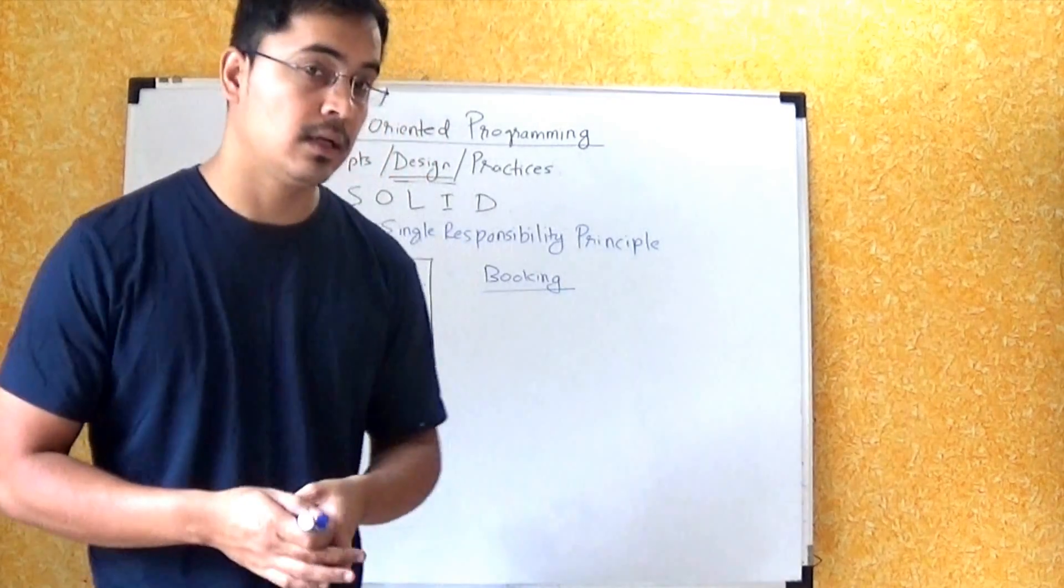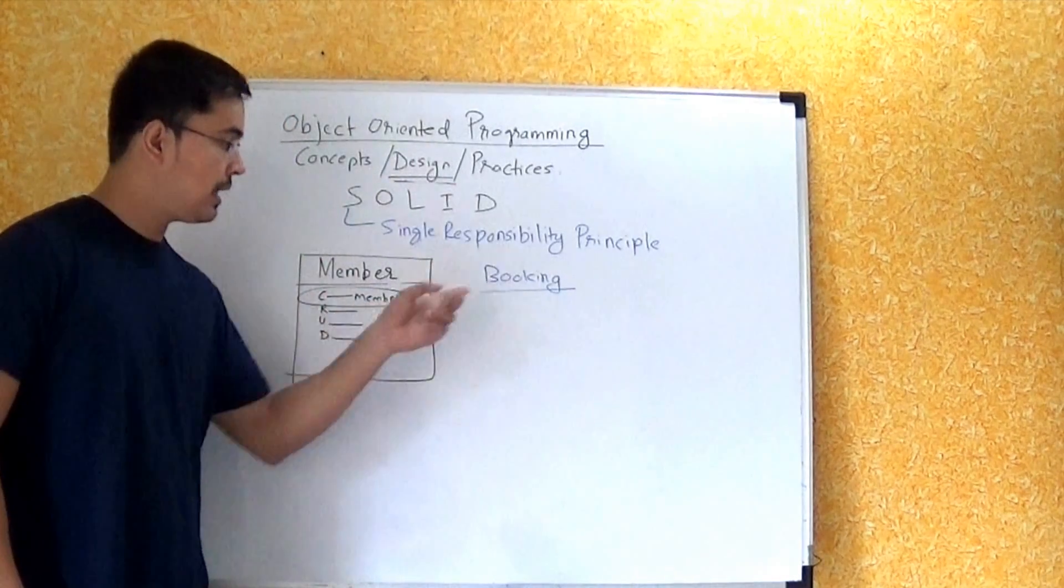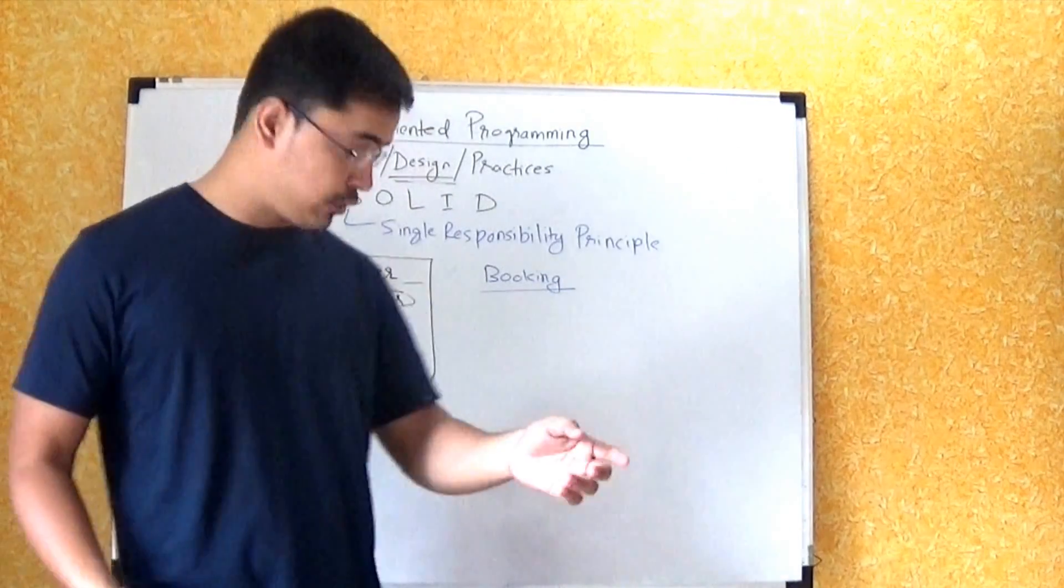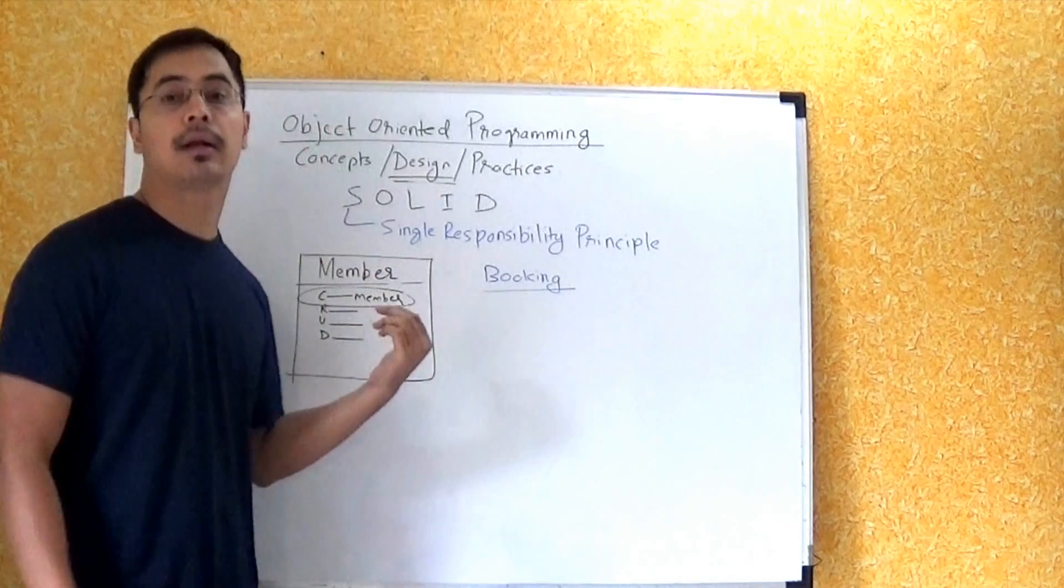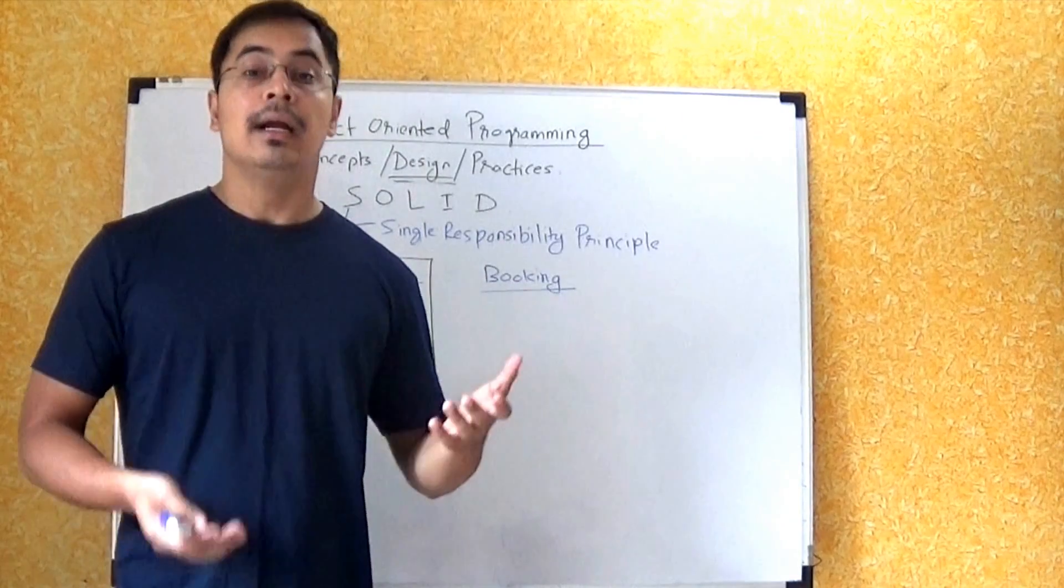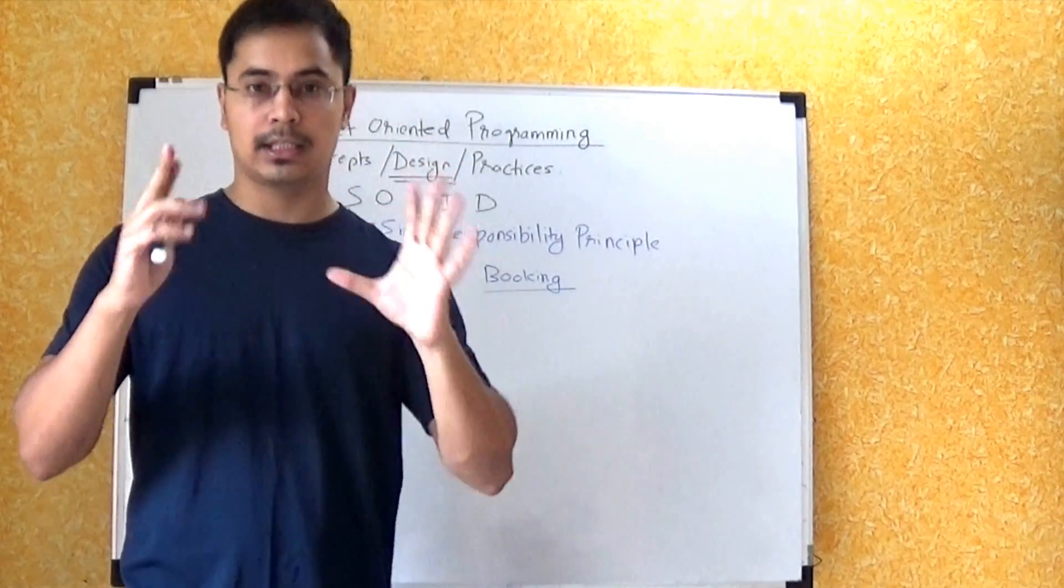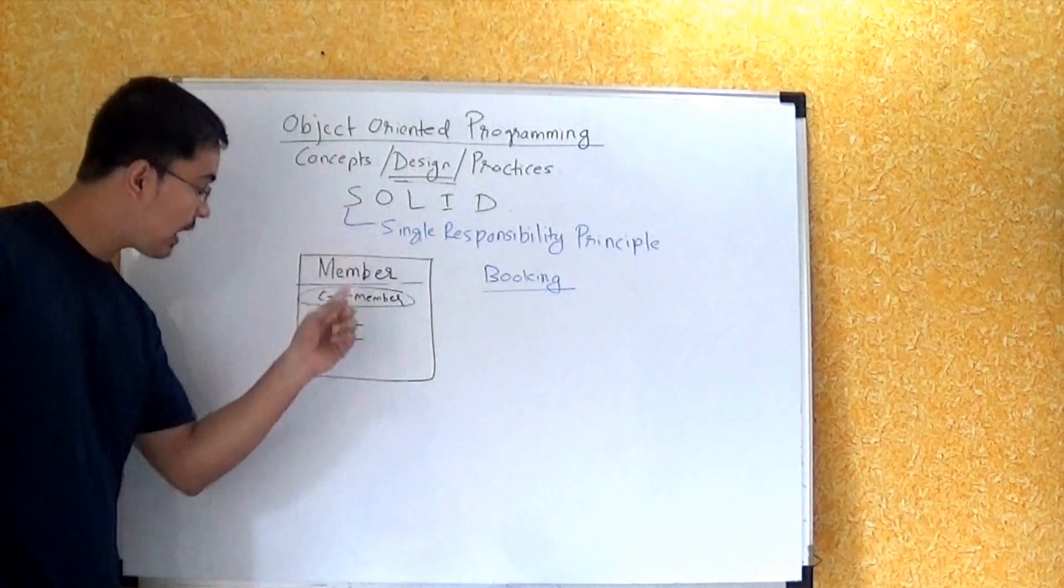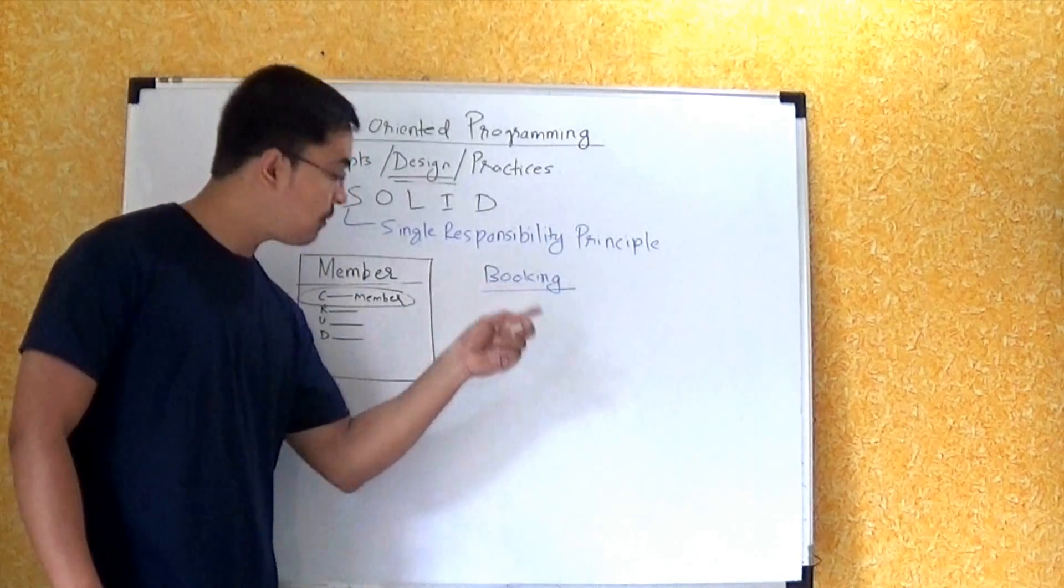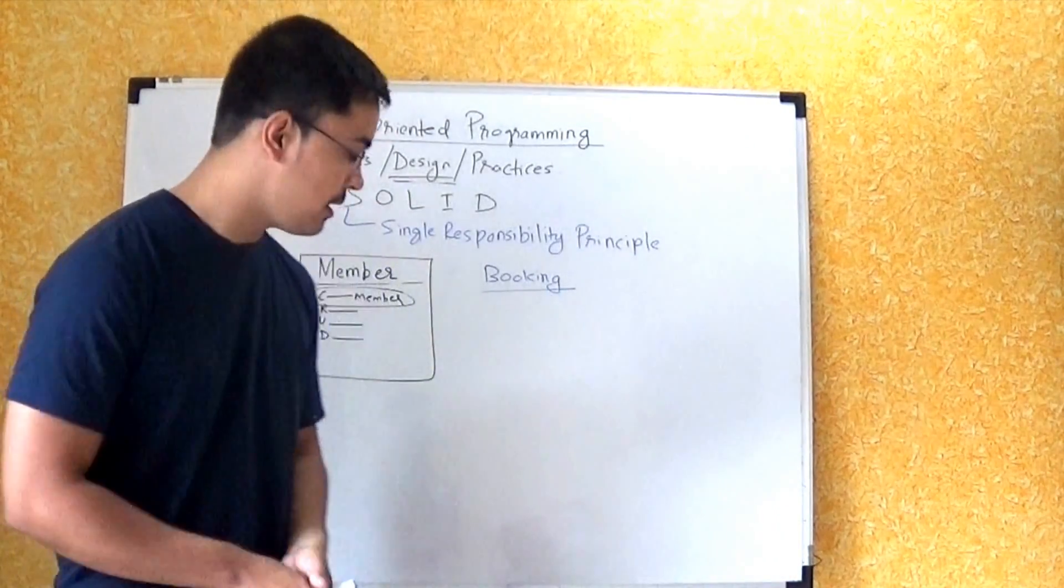decides to change those rules that now we have certain different requirements for registering new members. So only that change in functionality should drive change in Member class. Let's say tomorrow you decide to do changes in booking rules, so they should change the booking class. They should not change the member class. Are you getting it? That's why we are saying single responsibility principle. It is easy to maintain and change software when you maintain the context correct. Context of this class is about activities about members.